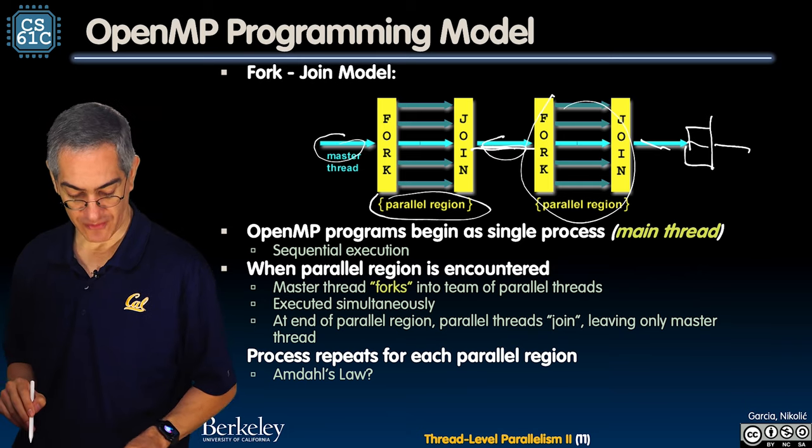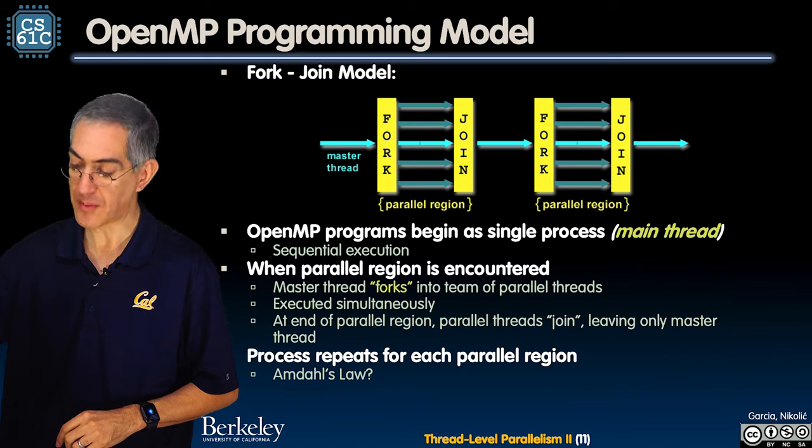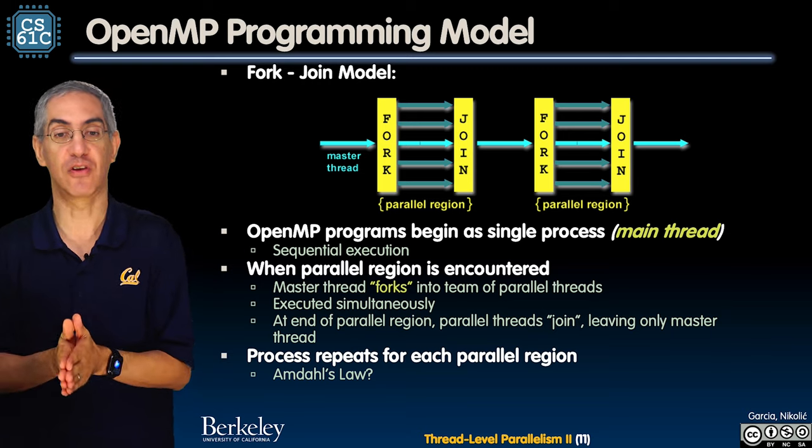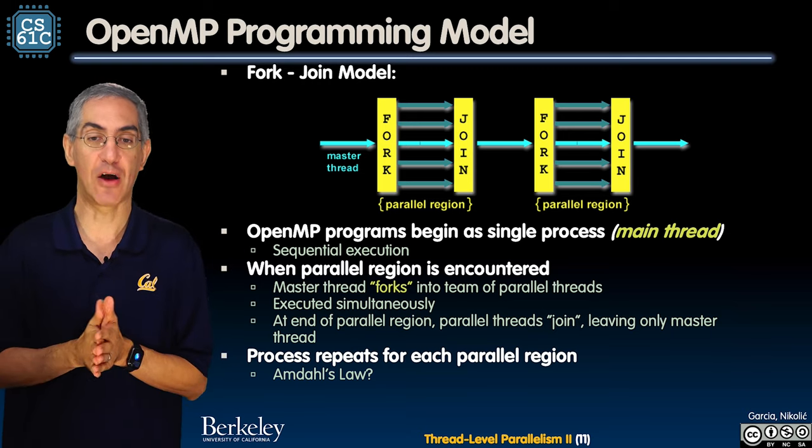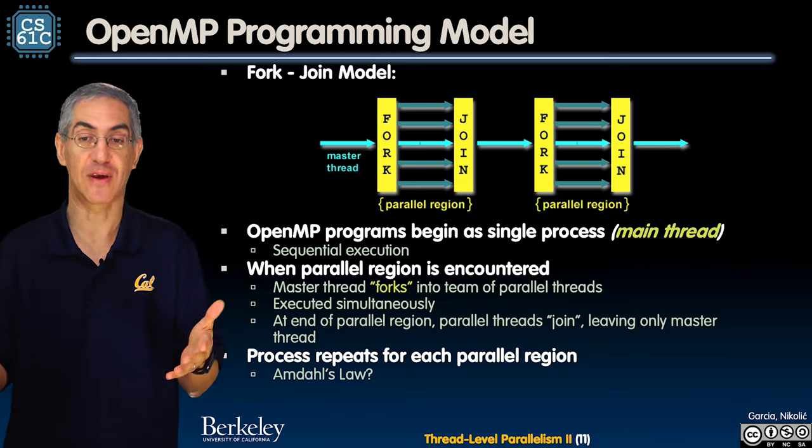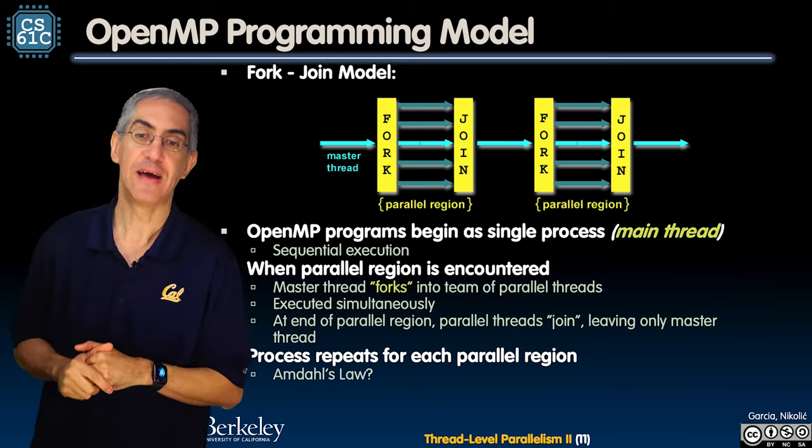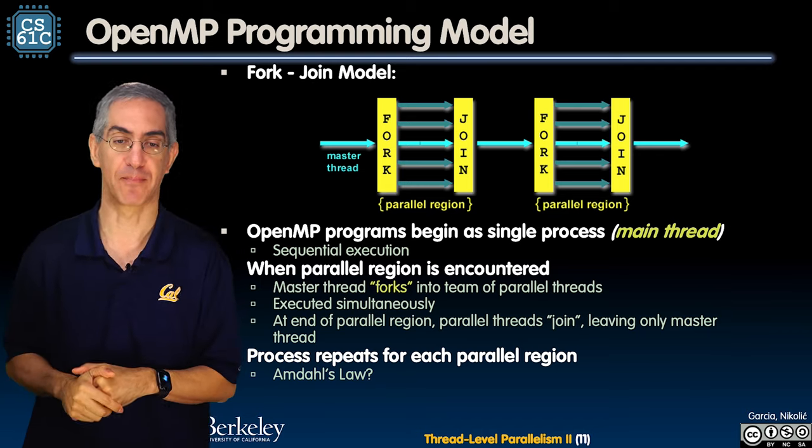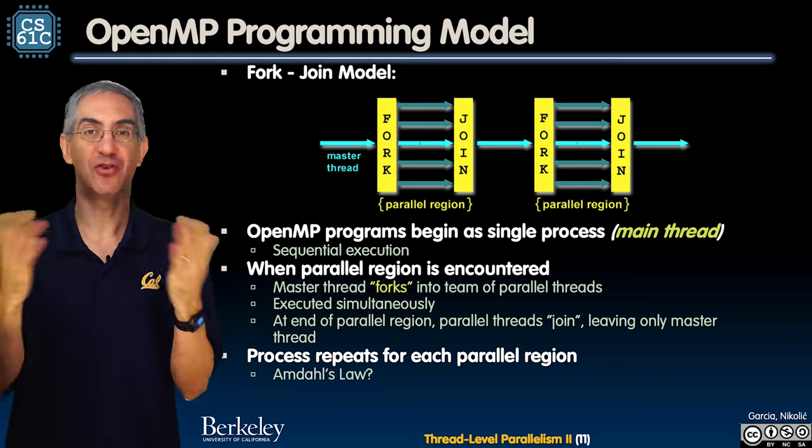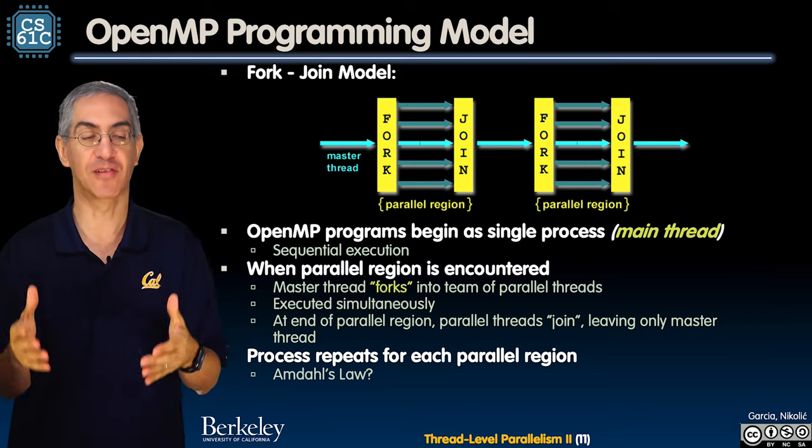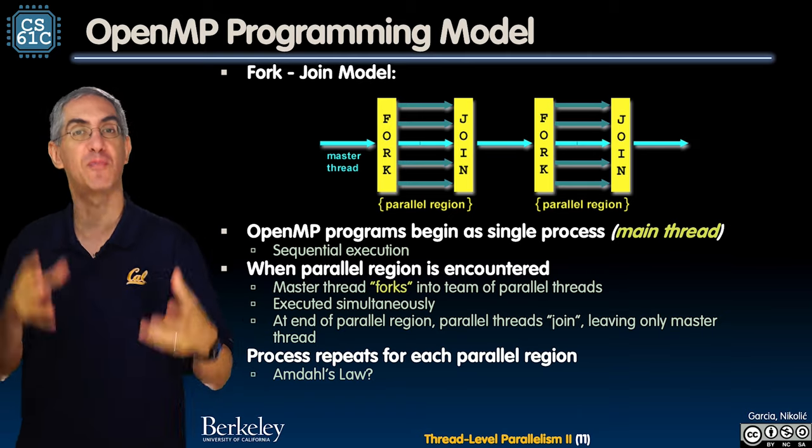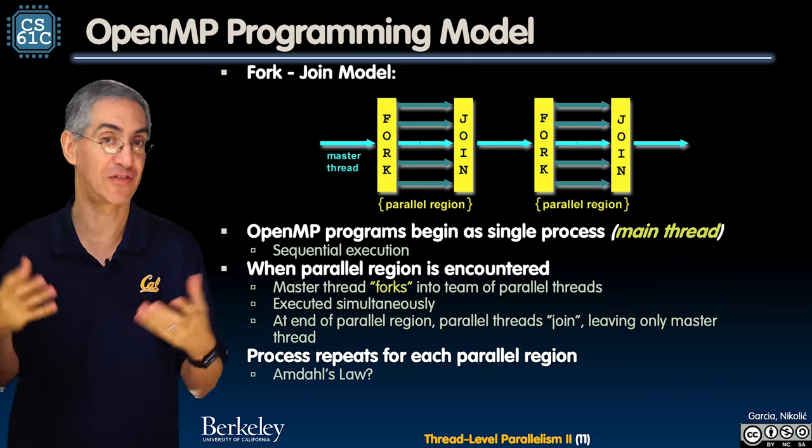They begin in a single process - the main thread - this is the sequential execution. When a parallel region is encountered, it forks into parallel threads. They execute simultaneously as much as the hardware will allow. At the end, there's a join which brings it back to the serial portion. We're gonna see Amdahl's law - the point is it's really painful being in these serial portions. The longer you spend in serial portions, the harder it is to speed up the whole thing.